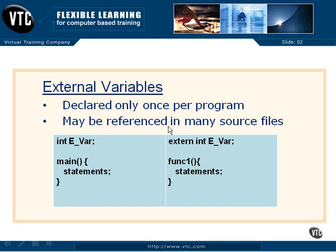Let's take a couple of minutes to talk about something called external variables. C programming has the concept of external and internal items. An internal item is something declared within a function. All functions are external items, because one function cannot be declared inside of another function, so they are all at the external level. Variables, however, are places in memory where we put things — different values — and they can be external or internal.